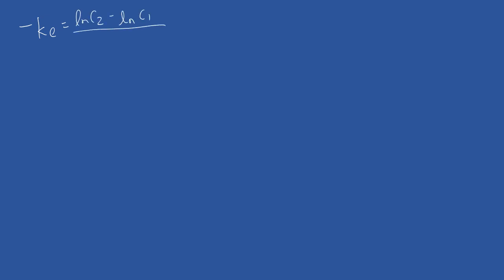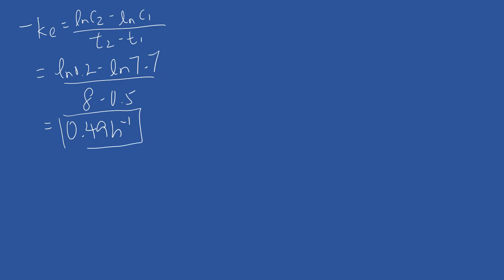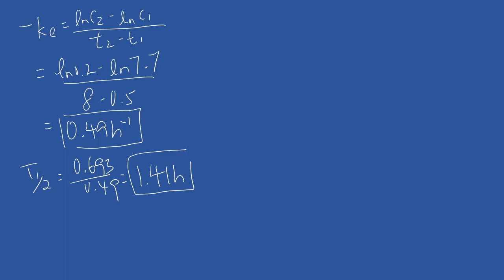The first part is to calculate the gradient: negative ke equals (ln C2 minus ln C1) divided by (t2 minus t1). Using ln 0.2 minus ln 7.7 divided by (8 minus 0.5), the answer for ke is 0.49. For the second part, the half-life for elimination is 0.693 divided by 0.49, giving 1.41 hours.